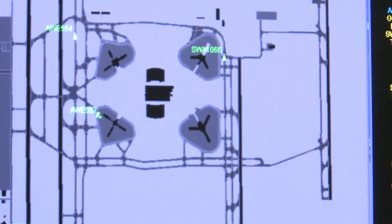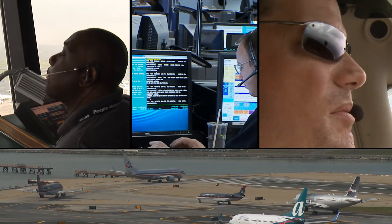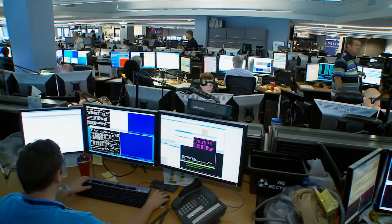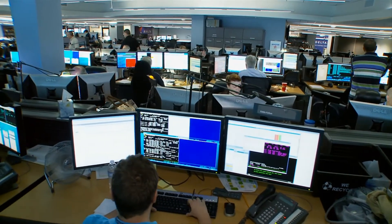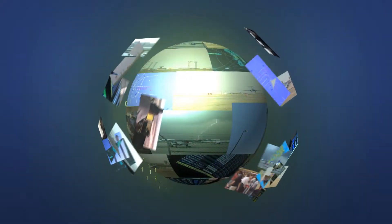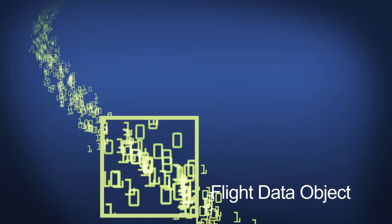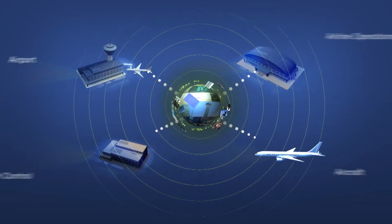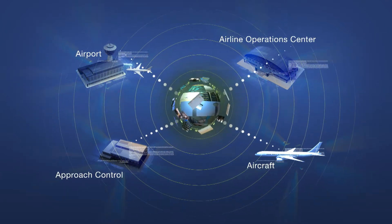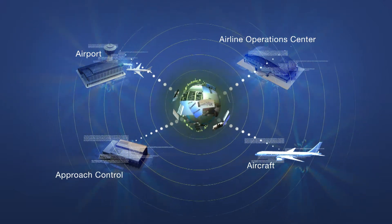Tools and infrastructure being deployed today are laying the groundwork for the collaborative environment that will ultimately enable controllers, pilots and airline operation centers to work together to ensure the most efficient surface traffic management. One of the most promising tools now in development is the flight data object, a constant dynamic stream of comprehensive flight status data designed to automatically update the systems the FAA and the airlines use to track aircraft and make collaborative traffic management decisions.